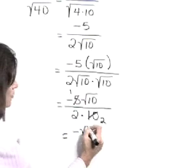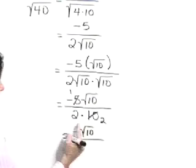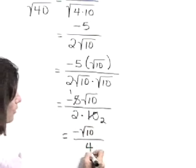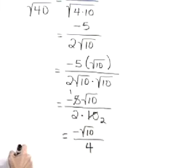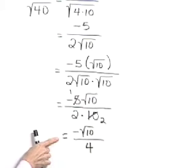This leaves a negative square root of 10 in the numerator and a 2 times 2 or 4 in the denominator. After simplifying the expression, our simplest form is negative square root of 10 over 4.